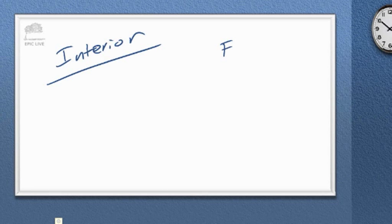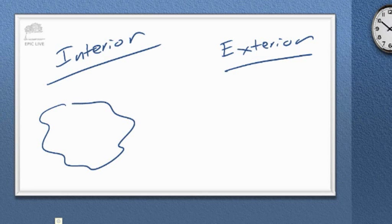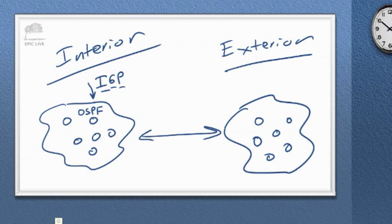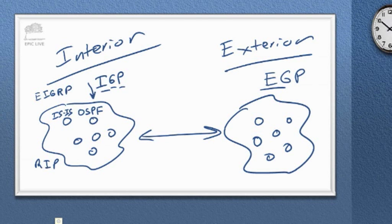There's another way to categorize routing protocols: interior versus exterior. We have a routing protocol to route between routers within our organization — for example OSPF — and this is called an IGP, interior gateway protocol. If we're routing between our company and another company, we use an EGP, exterior gateway protocol. There are lots of IGPs: OSPF, EIGRP, ISIS, RIP. But there's only one EGP to memorize — Border Gateway Protocol, the only exterior gateway protocol in use today.